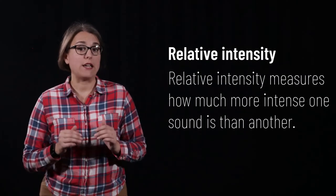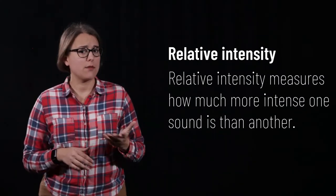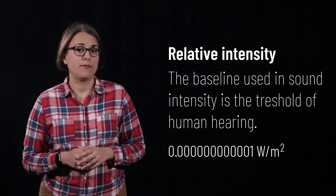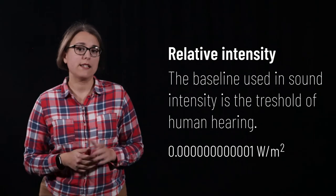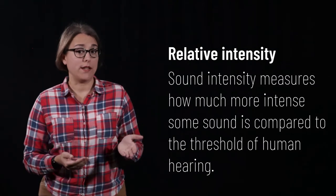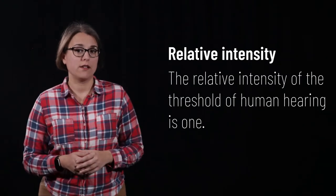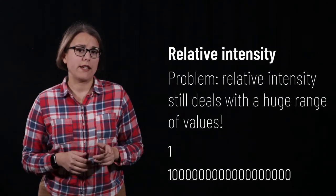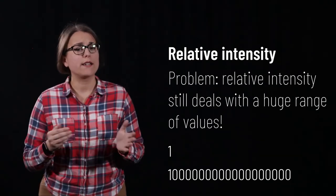Instead, scientists use a relative scale — how much more intense is one sound compared to another? To determine relative intensity, we divide by a baseline: the threshold of human hearing, 10 to the negative 12 watts per meter squared. The threshold of human hearing then has a relative intensity of 1, while the rocket engine has a relative intensity of 10 to the 18. We have gotten rid of very tiny numbers using a relative scale, but we still have an enormous range of values from quiet to loud.